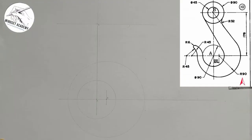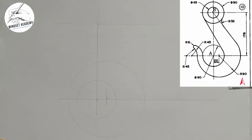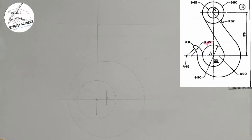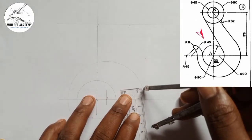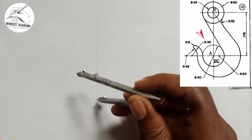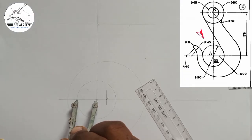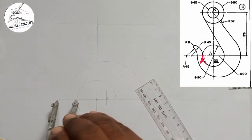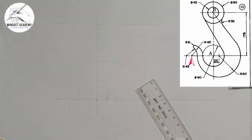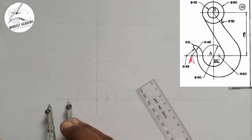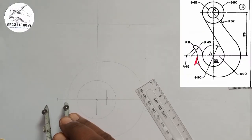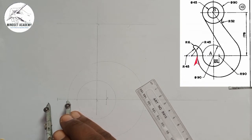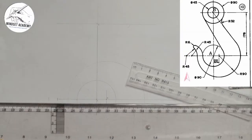The next thing is that from this center to the other arc here, it is given as radius 45. So I'm going to measure 45 on my meter rule, which gives 22.5. I already know that from here to here is 22.5 as measured earlier. So from this point to the next point is 22.5, and from that point again to the next point is another 22.5. Let me extend so we have a good view.